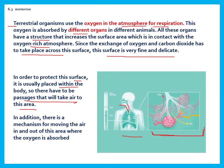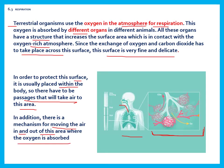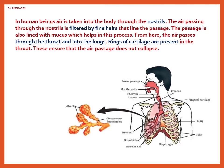There is a mechanism in terrestrial animals for moving air in and out of the area where oxygen is absorbed — this is breathing in and breathing out. In human beings, air is taken into the body through the nostrils. The air passing through the nostrils is filtered by fine hairs that line the passage. The passage is also lined with mucus, which helps in the process. The air then passes through the throat into the lungs. Rings of cartilage are present in the throat.